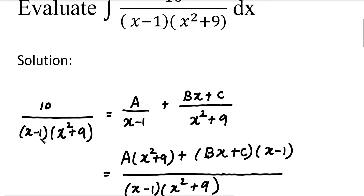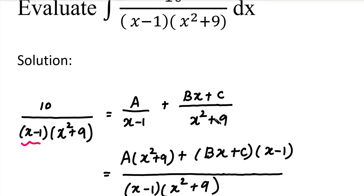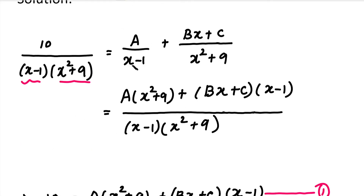So, 10 divided by (x minus 1) into (x squared plus 9). The first factor gives A divided by (x minus 1). The second factor is quadratic with power 2, so the numerator is (Bx plus C) divided by (x squared plus 9). Next, we multiply both sides — cross multiply — using the product of the two denominators.